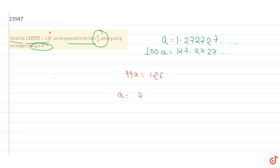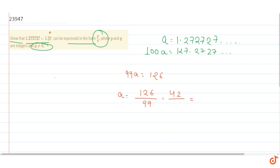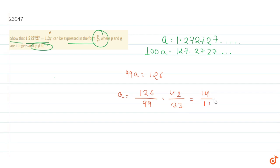So a equals 126 upon 99. If we divide by 3, we get 42 upon 33. Dividing again by 3, this gives us 14 upon 11. So we can express this as p by q, where p is 14 and q is 11. This is our answer.